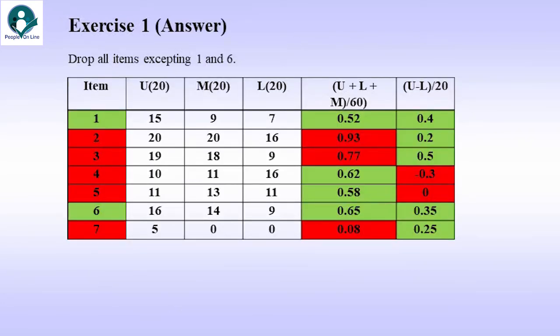Okay, so this is the result. So, the suggestion is that we need to drop all items excepting 1 and 6. We will keep 1 because 1 is showing sufficient scores, both on account of item discrimination as well as item difficulty. So, item difficulty, let's check the computation once. It's showing 0.52 for item 1. So, how is it 0.52? It is 15 plus 9 plus 7, which is 31 divided by 60. And how is item discrimination 0.4? Well, it is 15 minus 7, 8 divided by 20. Okay, that's how we've got the scores.